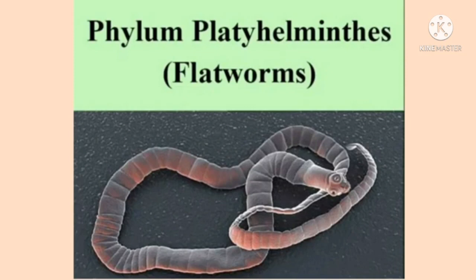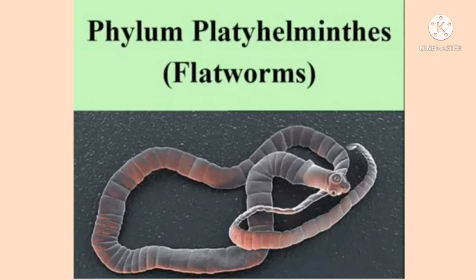Once again, phylum Platyhelminthes — flatworms. They are bilaterally symmetrical, triploblastic, acoelomate animals. Most of them are parasitic in nature; they have suckers and hooks, and with their help, they take food from the body of the host. Excretion is by flame cells. The worms are hermaphrodites — both sex organs are present in the same animal. Both male and female reproductive organs are found in a single individual. Example: tapeworm.